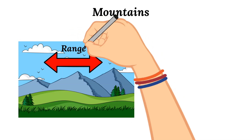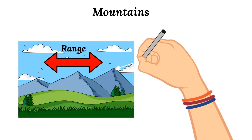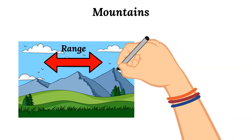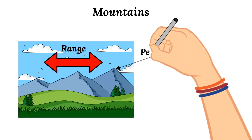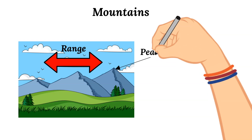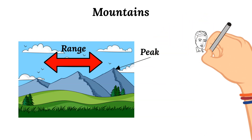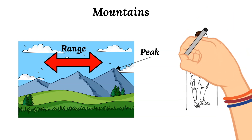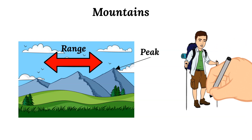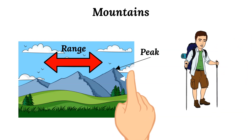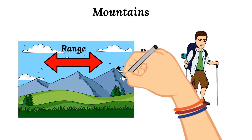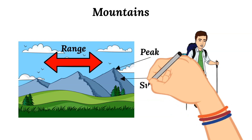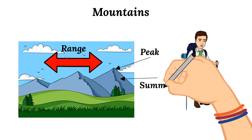The highest point of a mountain is called the peak. But if a hiker is hiking to the top of a mountain, they will most likely only reach what's called the mountain's summit. The mountain's summit is the highest area that an individual can reach. So it is not uncommon that someone trying to climb a mountain can reach the summit, but cannot reach the peak or the highest point of the mountain.